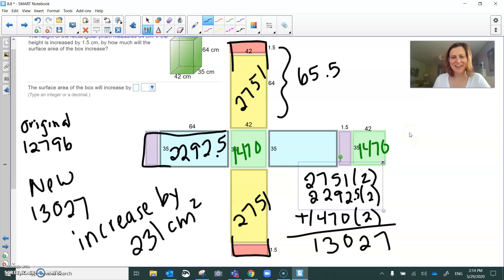Okay, so now the yellow is increased by 1.5 centimeters. 65.5 tall by 42 wide is 2751. 64.5. No, 65.5. 65.5 times 35 is 2292.5.